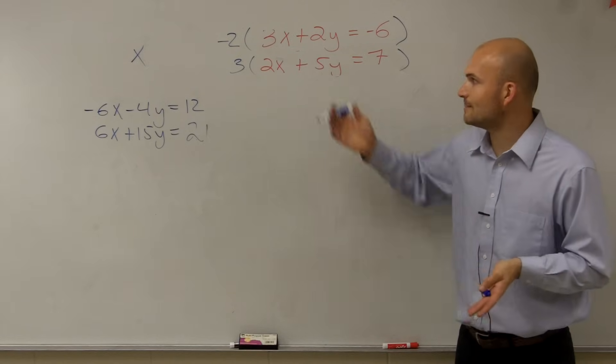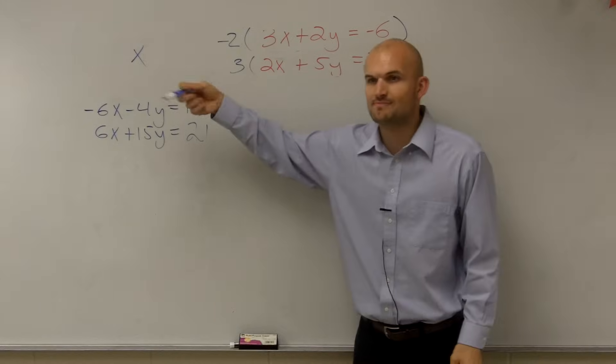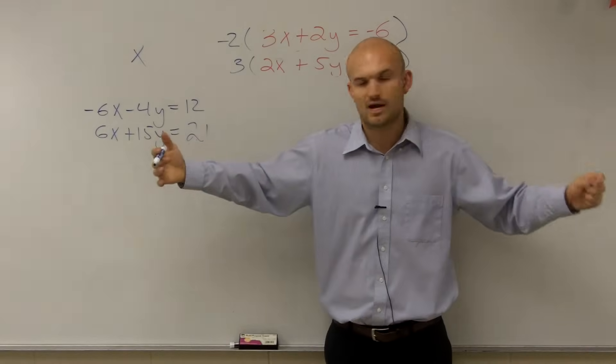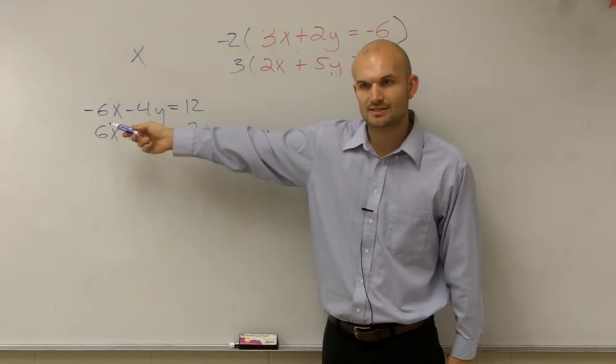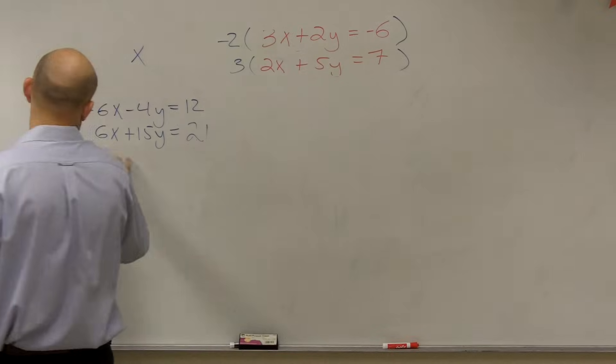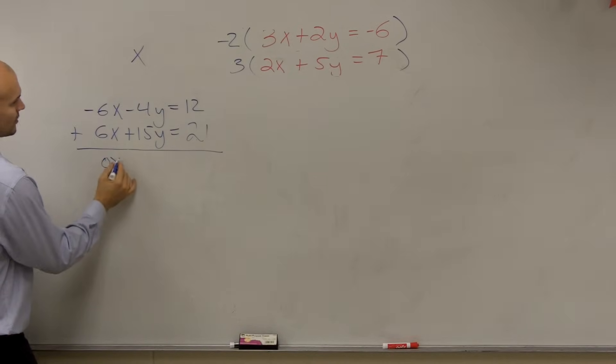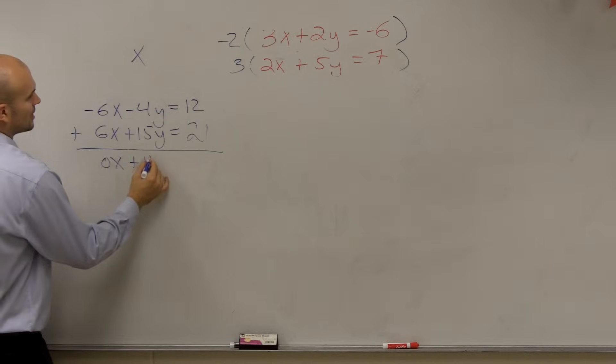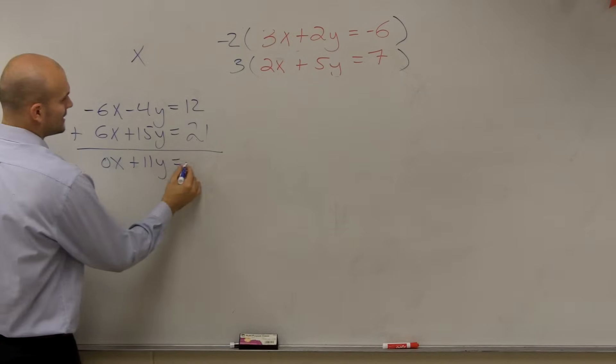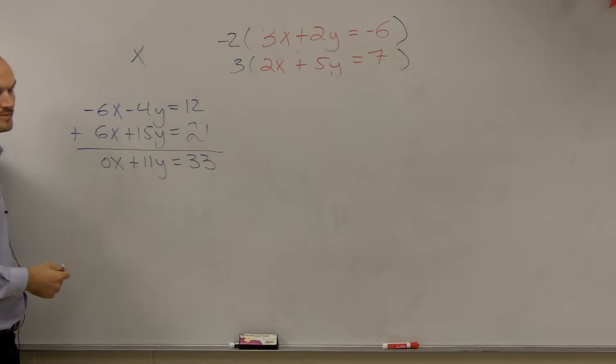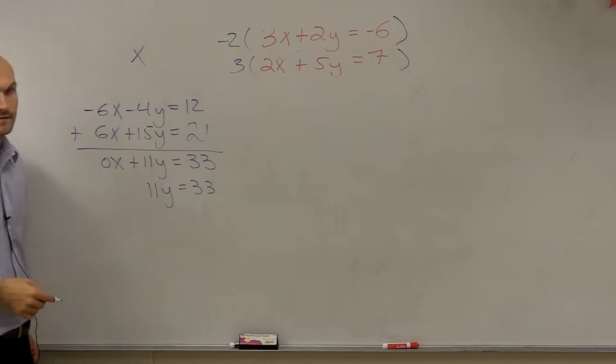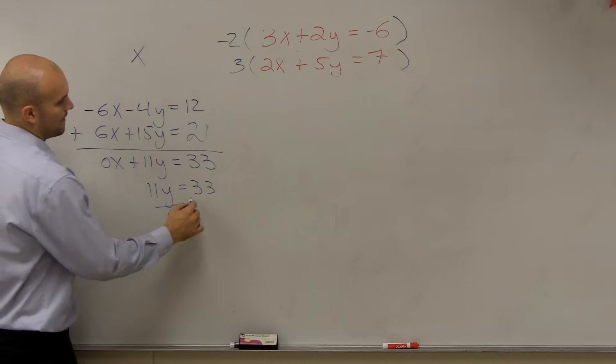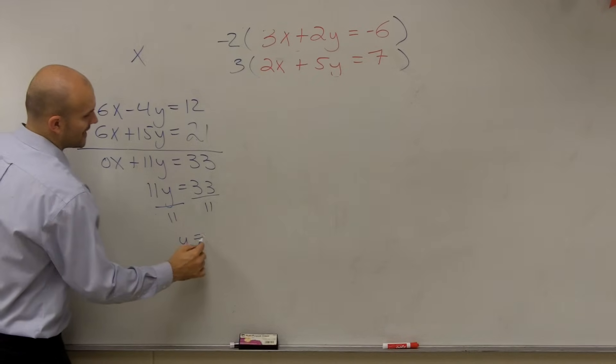So multiply every single term by your factor that you decide. Now the reason why, again, why did I pick negative 2 and 3? Because by multiplying them by different numbers, when I add these up together, am I going to now eliminate the x? Yes, I will. So now I get 0x plus 11y equals 33. So I get 11y equals 33. Divide by 11. Y equals 3.